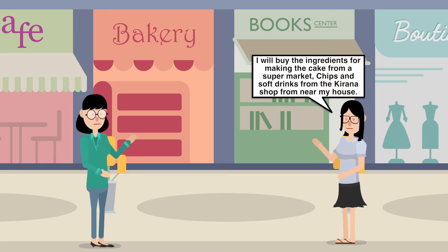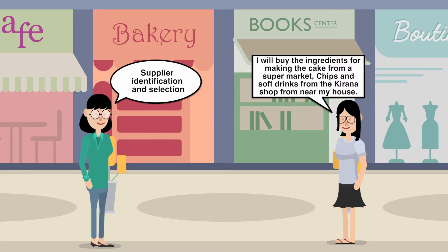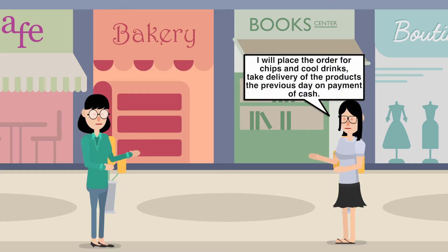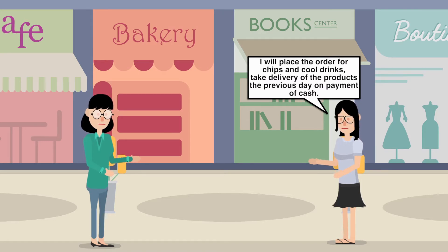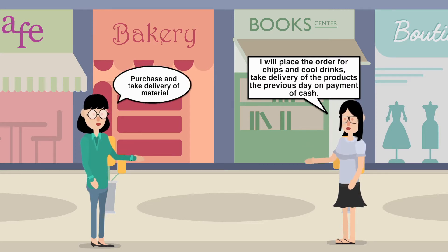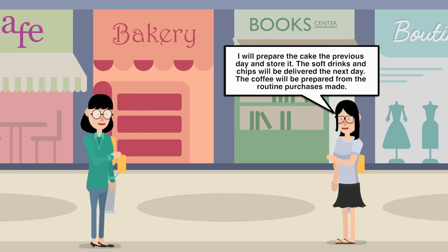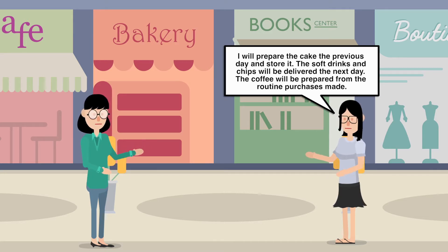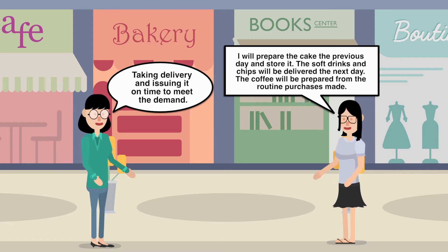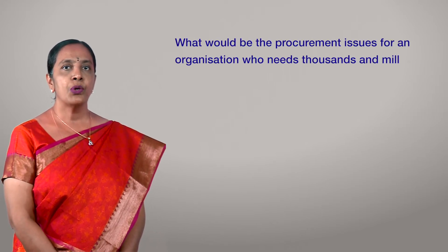You would buy ingredients for making the cake from a supermarket, and chips and soft drinks from a local Kirana shop — this involves supplier identification and selection. You would place the order, take delivery of products the previous day on payment of cash. The cake is prepared and stored in the refrigerator, soft drinks and chips are delivered the next day, and coffee is purchased from routine purchases, all taken and issued on time to meet demand.